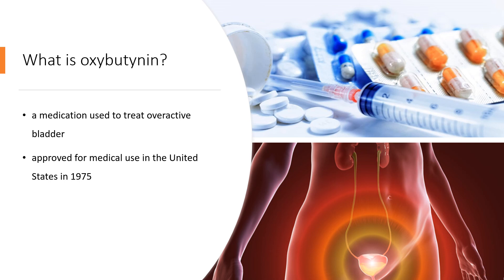While used for bed wetting in children, evidence to support this use is poor. It is taken by mouth or applied to the skin. Oxybutynin was approved for medical use in the United States in 1975. It is available as a generic medication. In 2020, it was the 97th most commonly prescribed medication in the United States, with more than 7 million prescriptions.